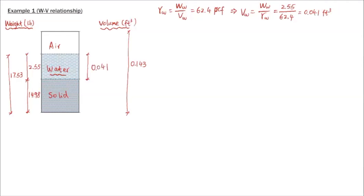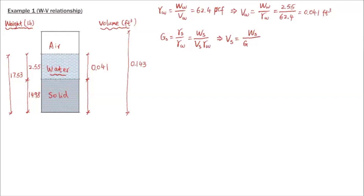The next unknown is the volume of solids. We are given Gs, the specific gravity. By definition, specific gravity equals unit weight of solids over unit weight of water, and unit weight of solids equals weight of solids over volume of solids. Rearranging, volume of solids equals weight of solids divided by Gs times unit weight of water. That is 14.98 divided by 2.7 times 62.4, giving a volume of solids of 0.089 cubic feet.